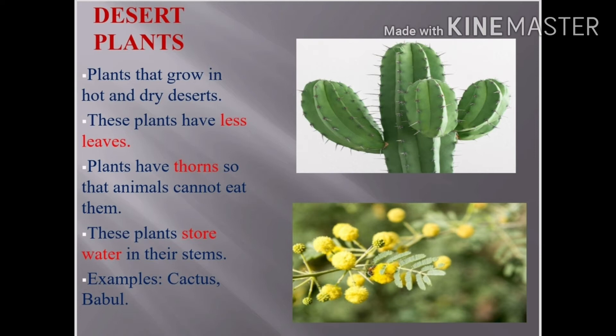These needle-like structures, called thorns, protect the plants from animals so that animals cannot eat them. Another special feature is that desert plants store water in their stems. This helps them survive for a long duration in the desert. The cactus shown on the screen is an example of a desert plant.